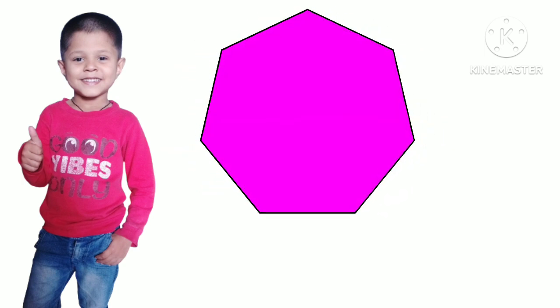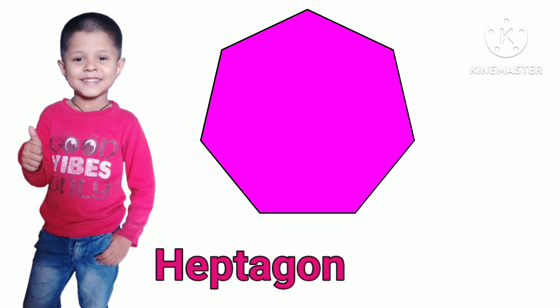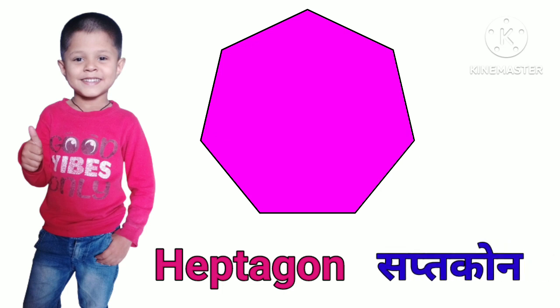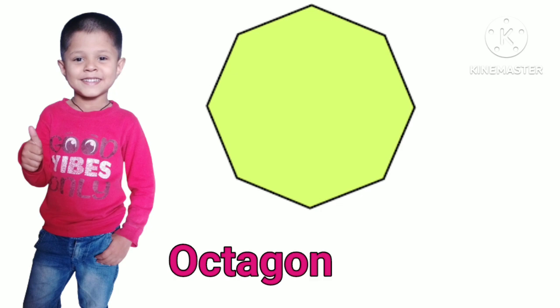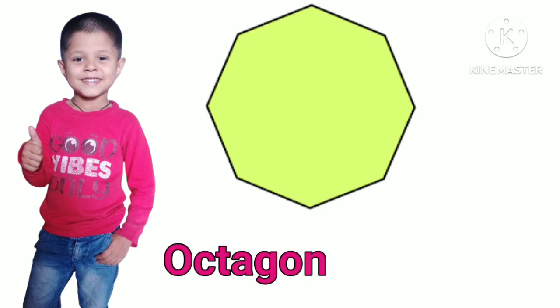Heptagon. H-E-P-T-A-G-O-N. Heptagon means Saptagon. Octagon. O-C-T-A-G-O-N. Octagon means Ashtagon.